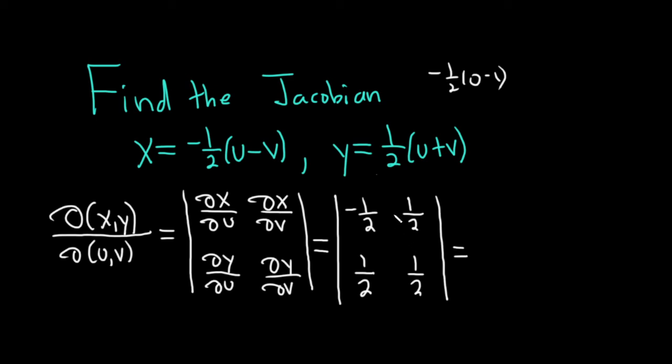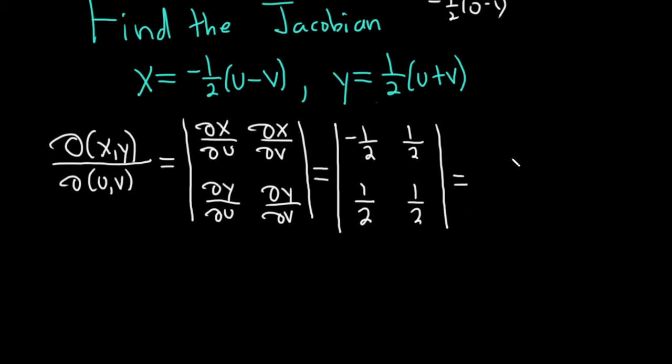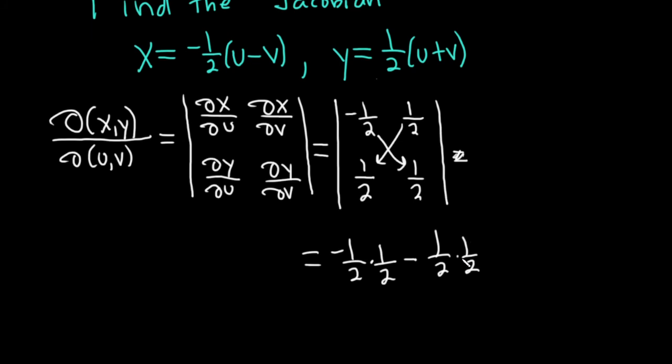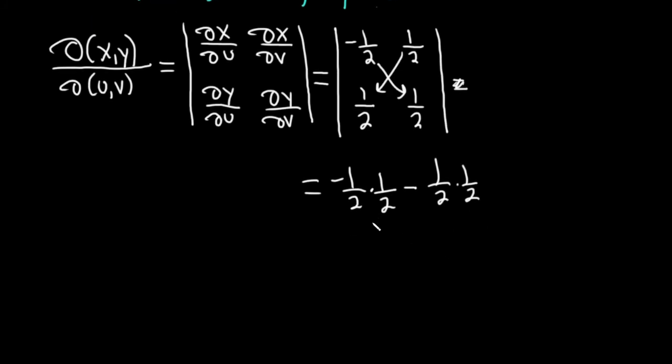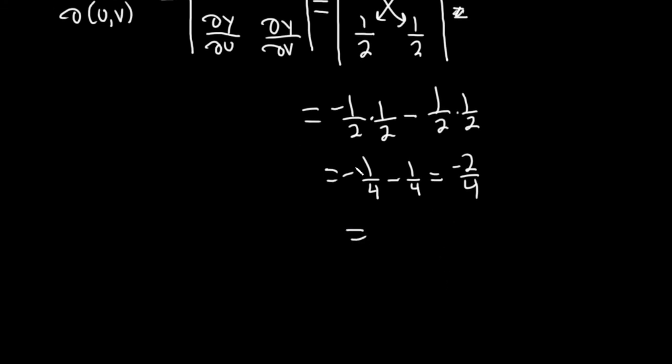Then we just use the familiar determinant formula. So I'm going to come to the second line here. This times this, so it's negative one half times one half minus one half times one half. So that's going to be negative one fourth minus one fourth, which gives us minus two fourths, which at the end of the day is just minus one half.